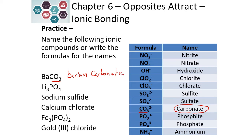Our next example: Li is in the first column of the periodic table, so we know what its charge is. Again, no Roman numerals need to be included. So the name of Li is lithium. PO4 is polyatomic, so we look in our table and see that its name is phosphate.